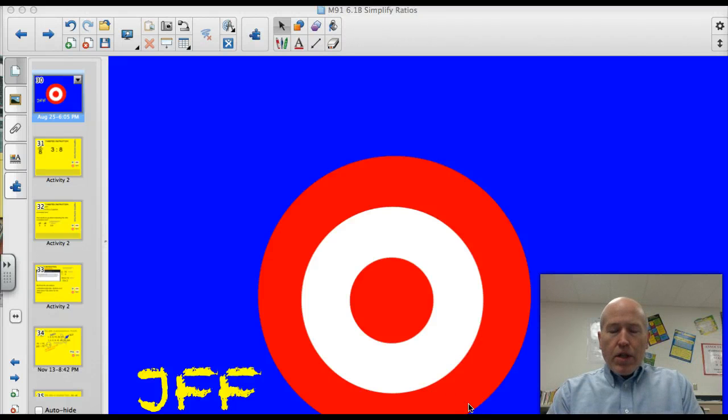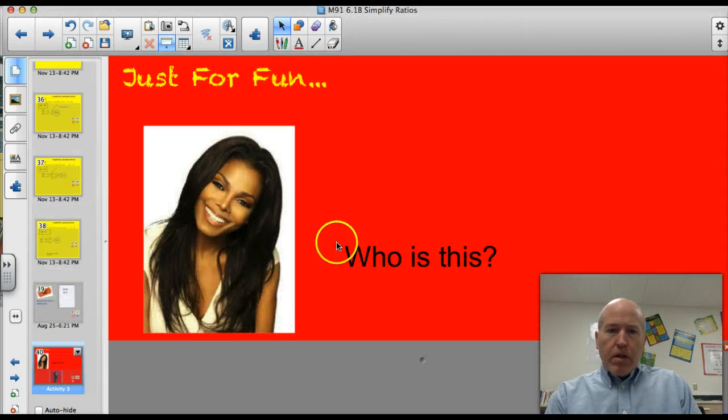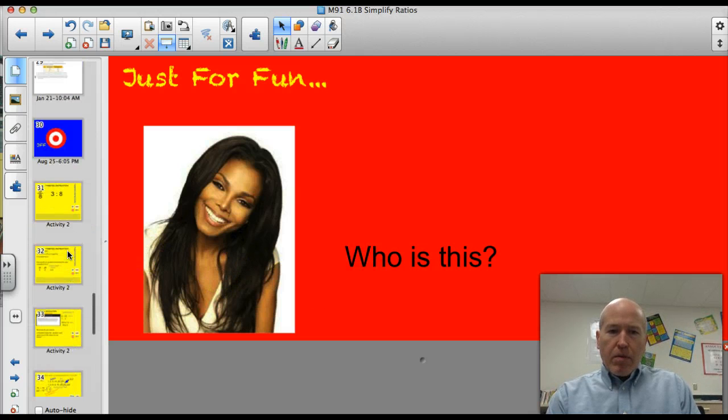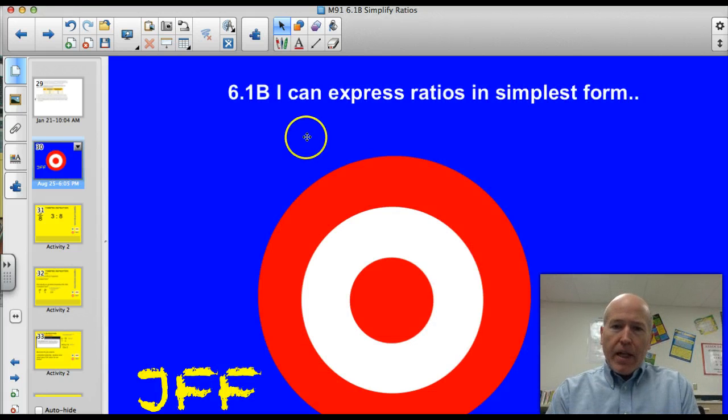Hey Valley Middle School, tonight we're going to work on simplifying ratios. Before we do that, let's go ahead and start with tonight's trivia question. Who is this pop diva from the 80s? Ask your parents, they probably would recognize her immediately. Tonight our target officially is 6.1b. I can express ratios in simplest form. Let's do this thing.